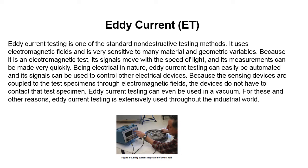Eddy Current Testing is one of the standard non-destructive testing methods. It uses electromagnetic fields and is very sensitive to many material and geometric variables. Because it is an electromagnetic test, its signals move with the speed of light and its measurements can be made very quickly. Being electrical in nature, Eddy Current Testing can easily be automated and its signals can be used to control other electrical devices. Because the sensing devices are coupled to the test specimens through electromagnetic fields, the devices do not have to contact the test specimen. Eddy Current Testing can even be used in a vacuum.